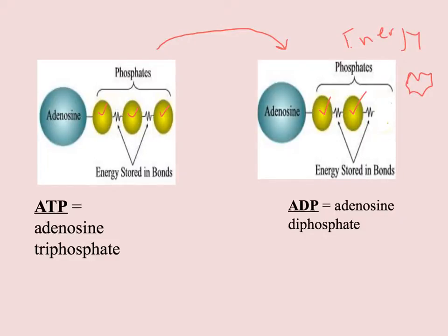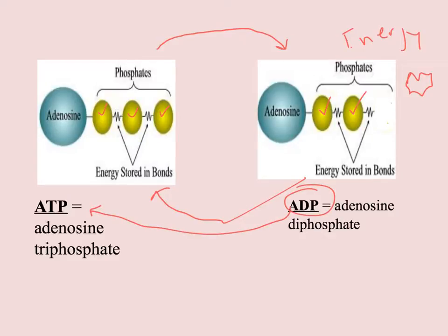Just like you don't throw away your cell phone when it hits zero percent, you don't throw away ADP either, because it can be recharged through cellular respiration. When you eat food, your mitochondria adds another phosphate onto the ADP to turn it back into ATP, and then it can be used to release energy again — it all goes around and around.